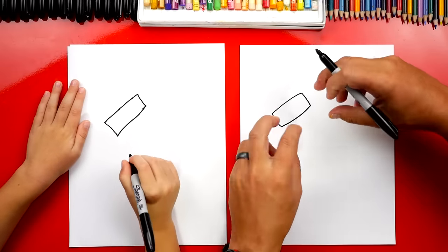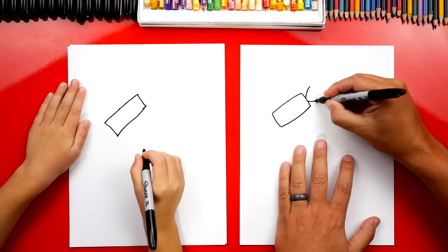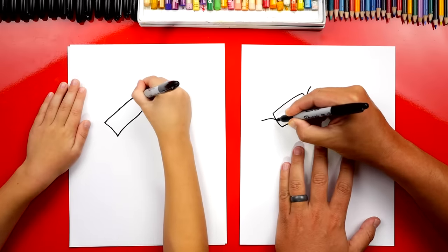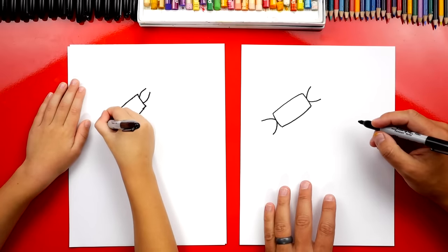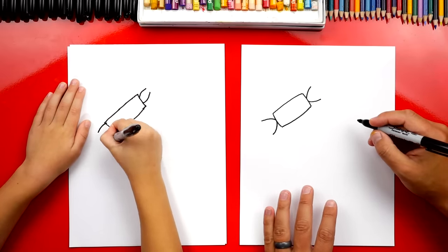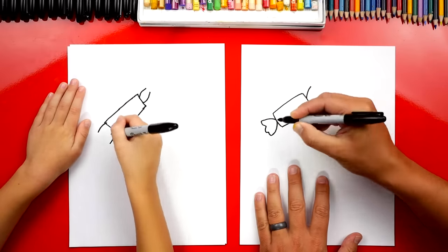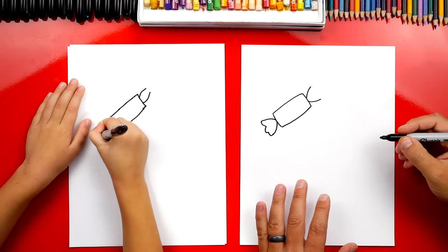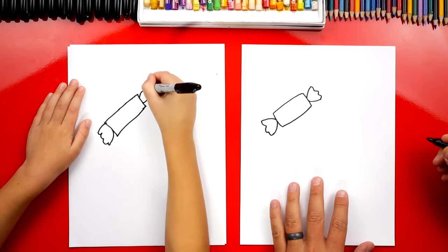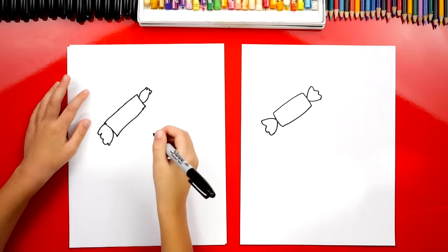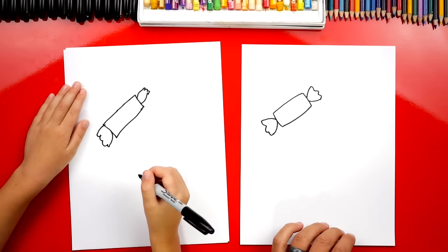Now let's draw the little wrapper that's twisted on each side. We're going to draw two lines that come out like this, almost looks like a sideways letter V. There you go! And then we're going to connect each side with a wavy, messy line. Could even be a zigzag line if you want. And we'll connect the other side. We did it! There's our first piece of candy. Pretty easy, right?